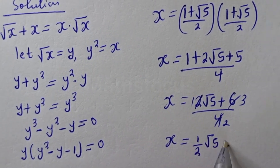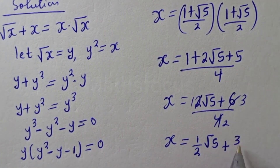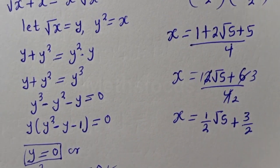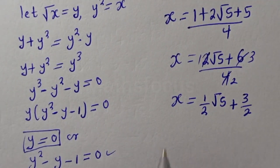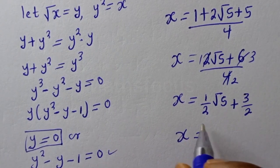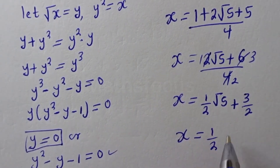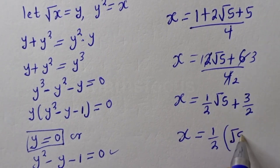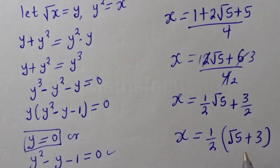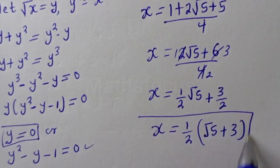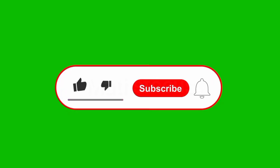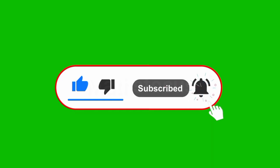Expanding, s equals one half times root 5 plus 3 over 2, and therefore s equals one half times the bracket root 5 plus 3 plus 2, and this is the final answer. Thank you.